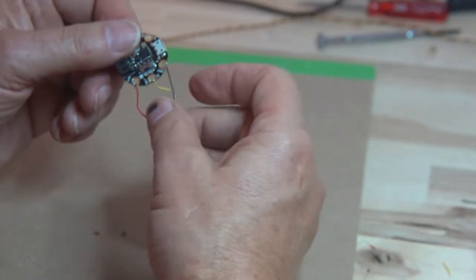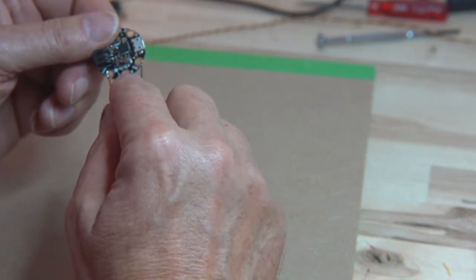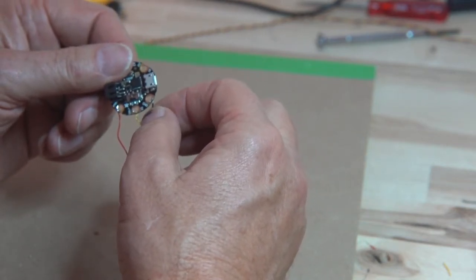And when you get it done with this phase, it should look like this. You've got the red going to the V-out, yellow going to the D1, and black going to the ground wire.